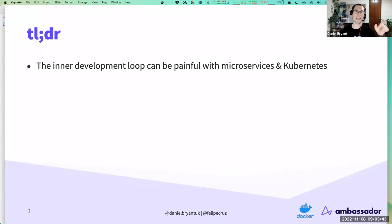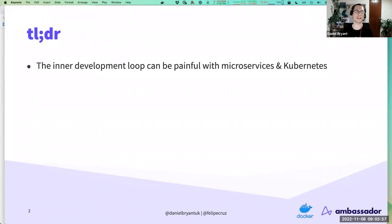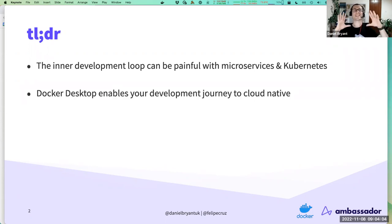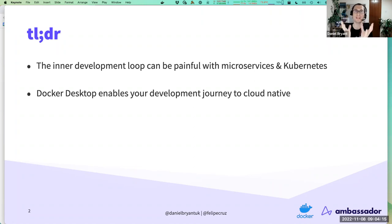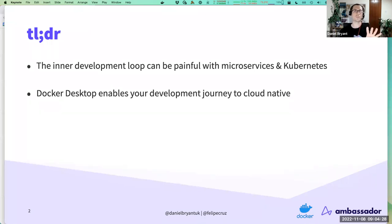But the inner dev loop can be painful with microservices — there's just more services than the classic monolith. Kubernetes and containers are fantastic but add more layers to the stack, so we've got to adapt how we do development and testing. Docker Desktop is a fantastic onboarding tool to get you on your journey to cloud-native. It's a great local developer portal, and with extensions it's gotten even better recently — that's what we're looking at today.